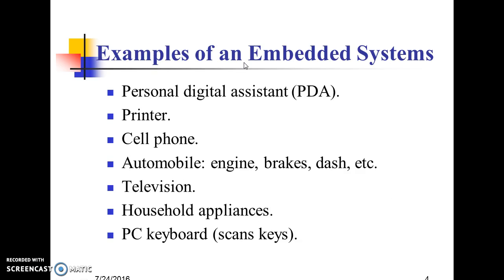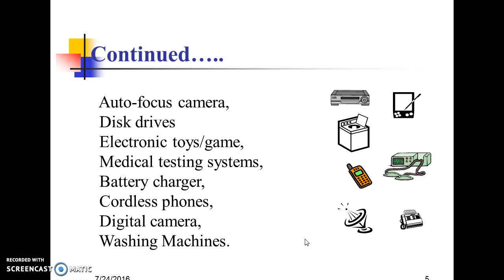Examples of an Embedded System include: Personal Digital Assistant (PDA), Printer, Cell Phone, Automobile Engine, Brakes, Dashboard, Television, Household Appliances, PC Keyboard, Auto Focus Camera, Disc Drives, Electronic Toys, Game Controllers, Medical Testing Systems, Battery Charger, Cordless Phone, Digital Camera, Washing Machine, and more.